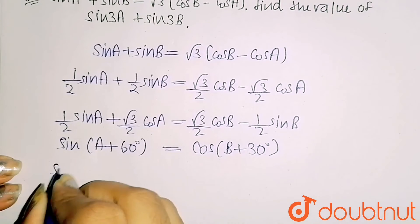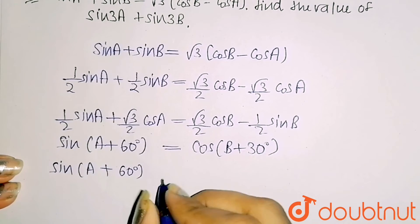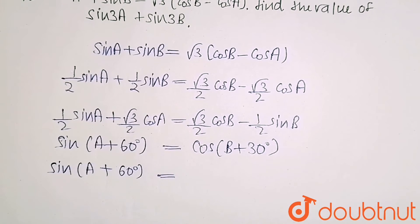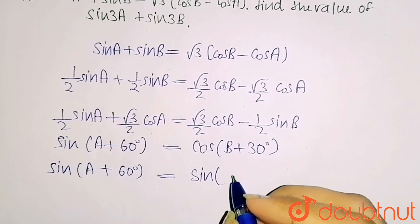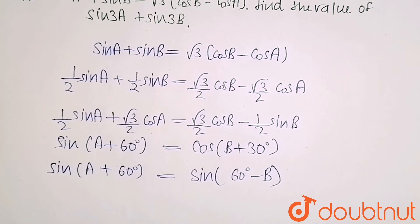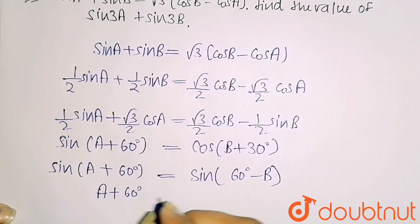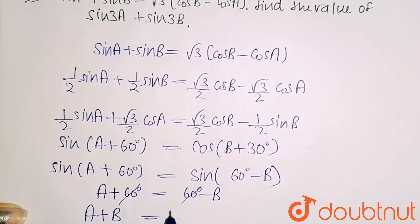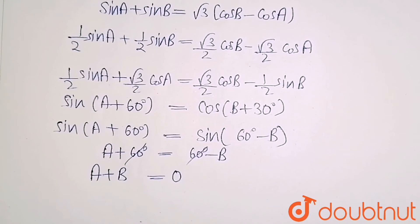So we have sin(A + 60°) equals cos(B + 30°). Converting the cosine to sine using 90° minus theta: cos(B + 30°) equals sin(90° minus 30° minus B) equals sin(60° minus B). Now comparing both sides: A + 60° equals 60° minus B, so A + B equals zero.